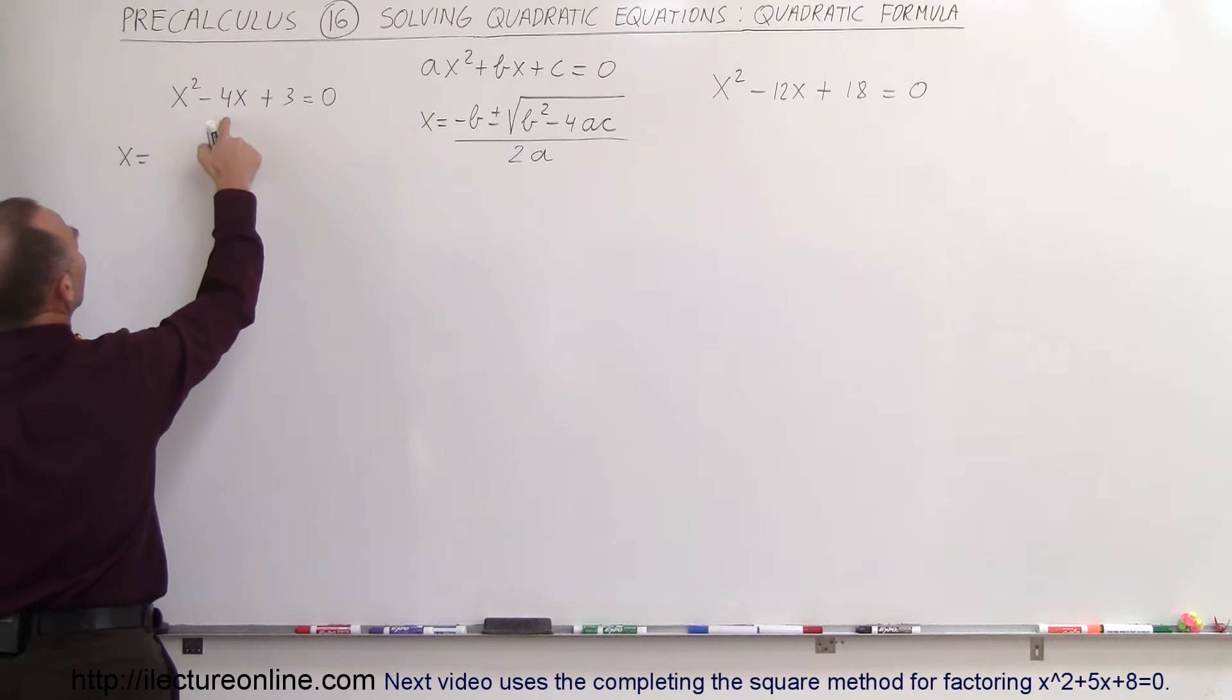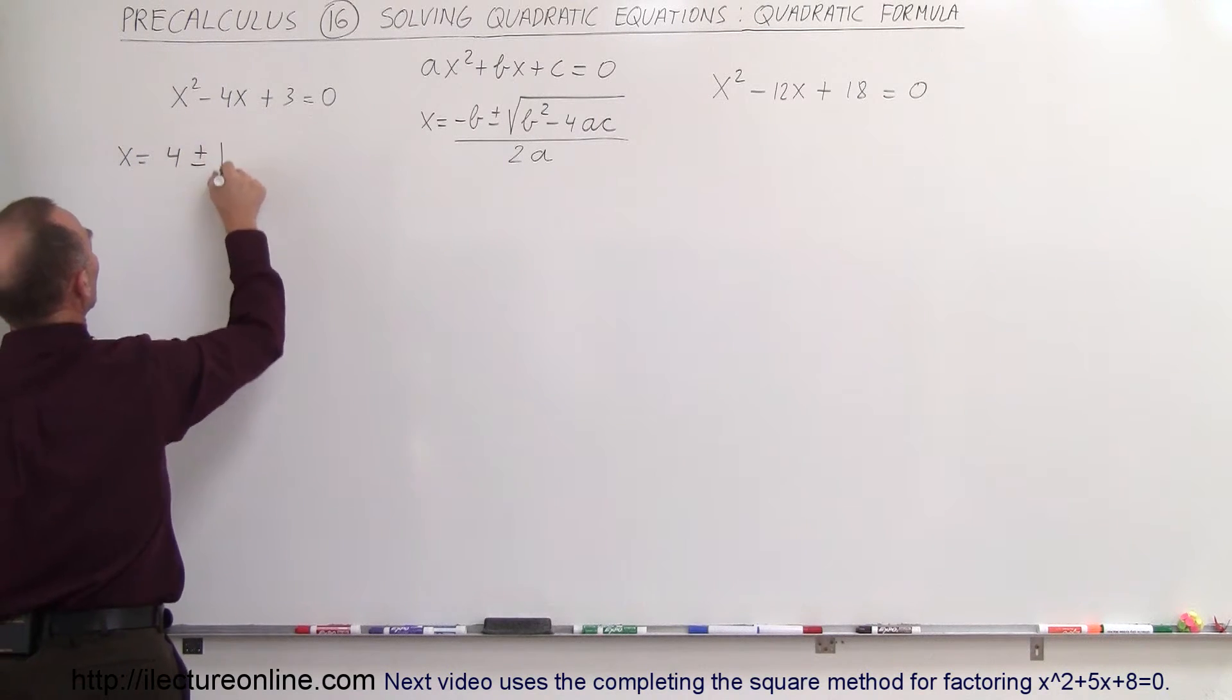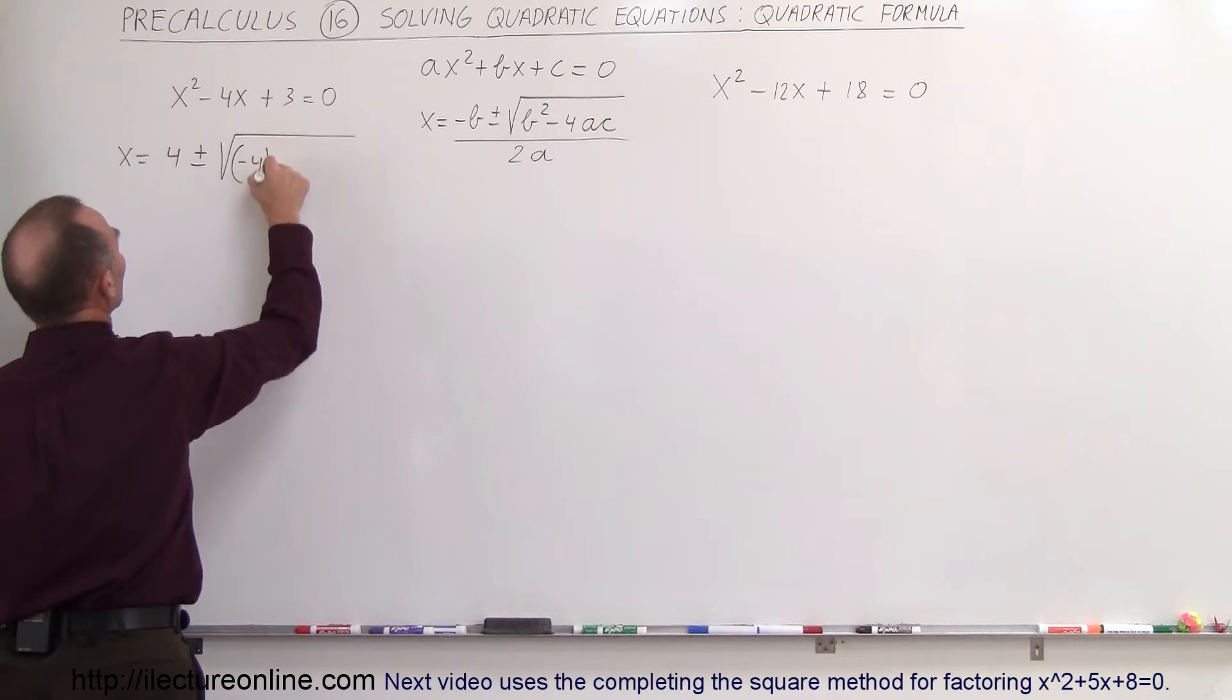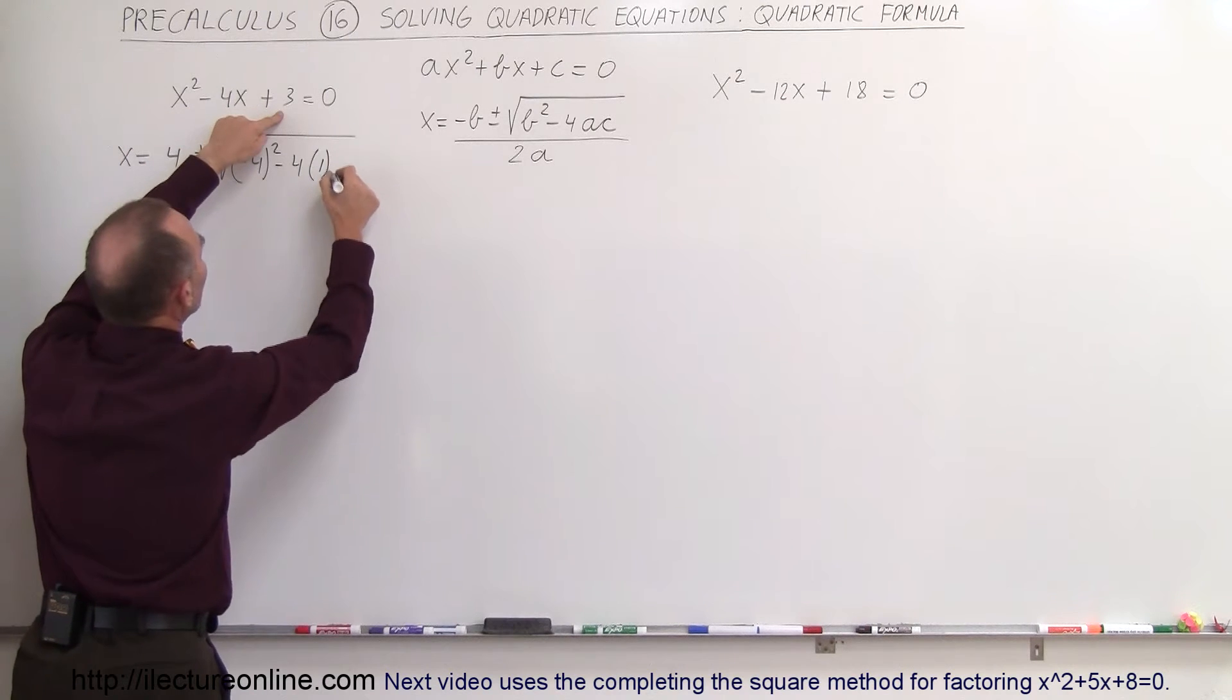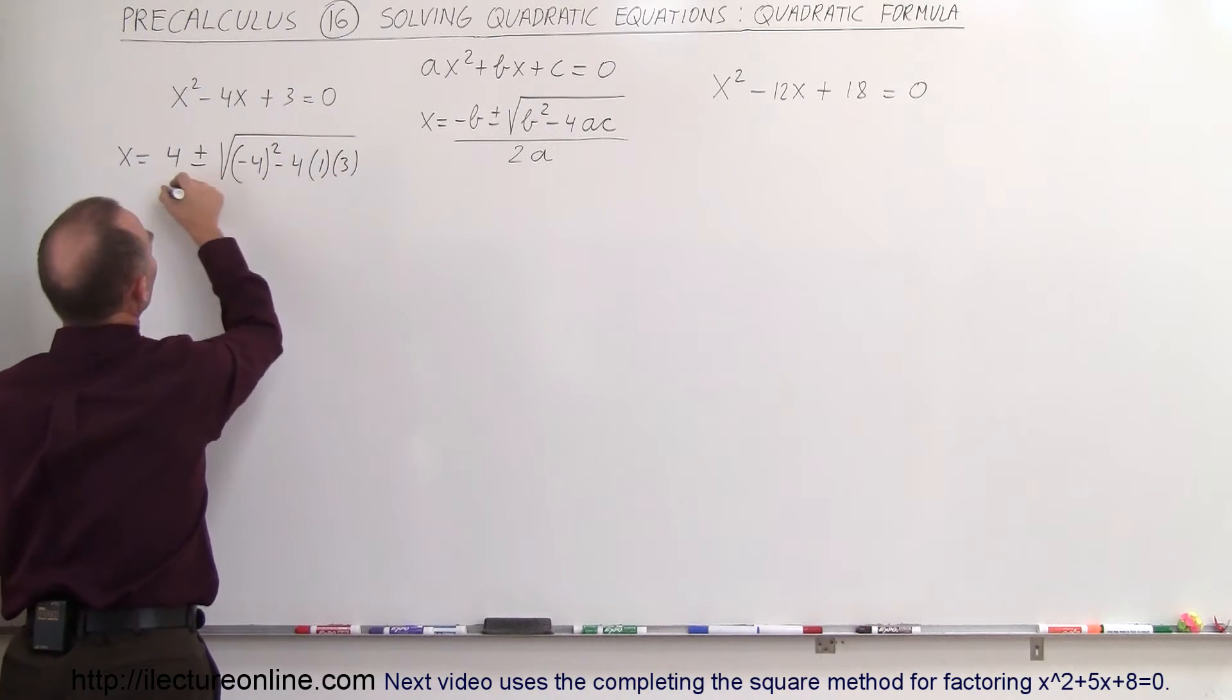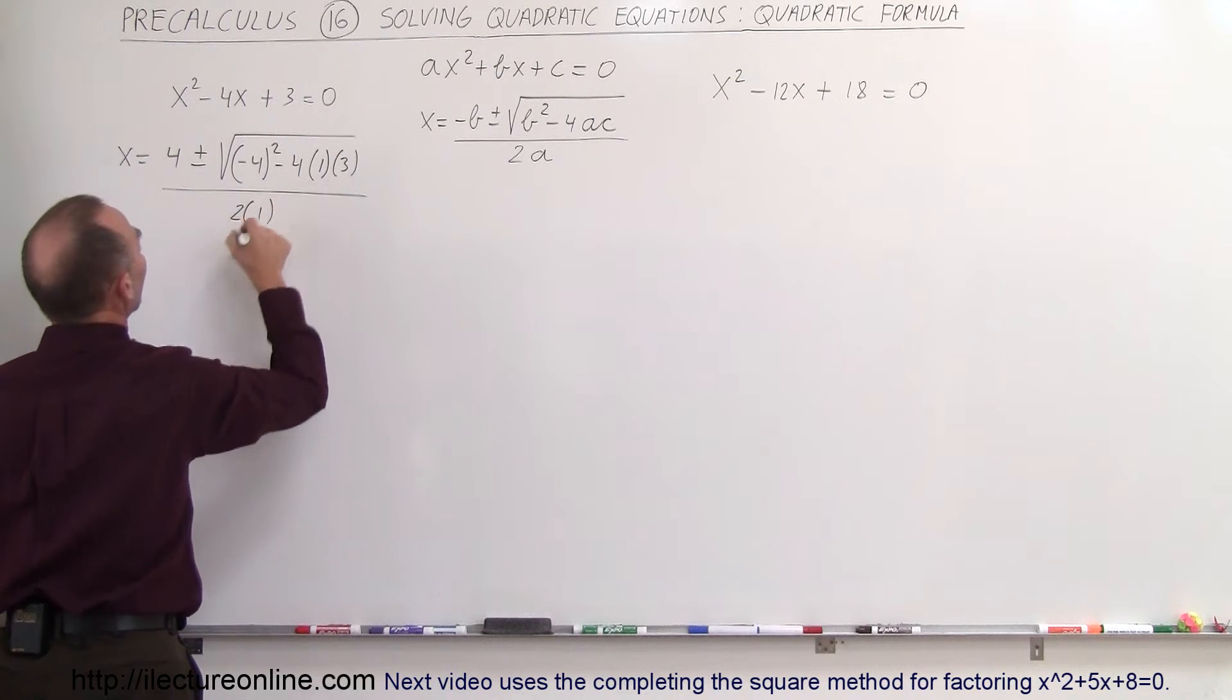x is equal to minus b, which is the negative of the negative 4, which is 4, plus and minus the square root of b squared minus 4 squared minus 4 times a, which is 1, times c, which is 3, all divided by 2a, 2 times 1.